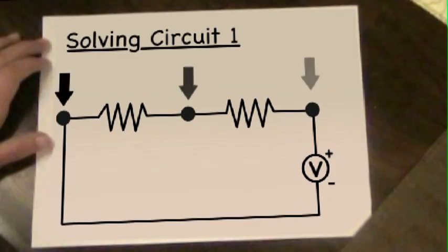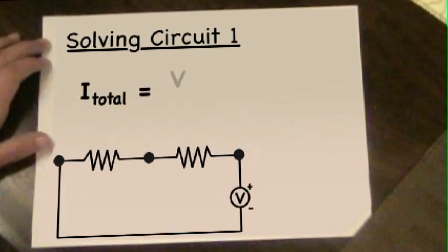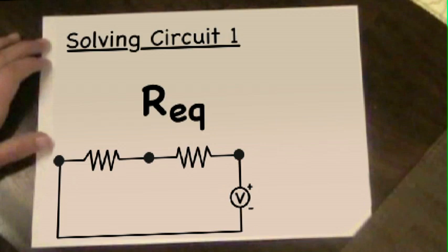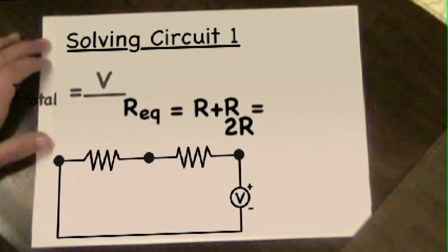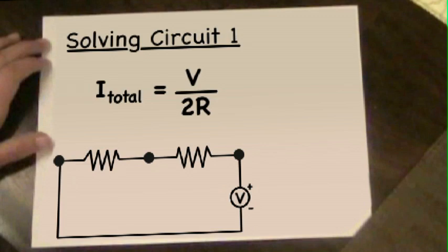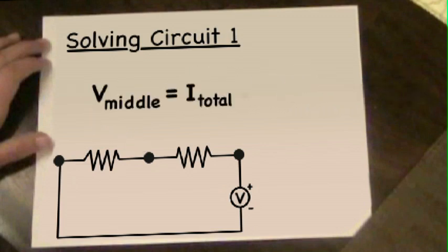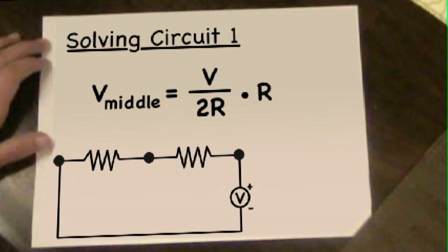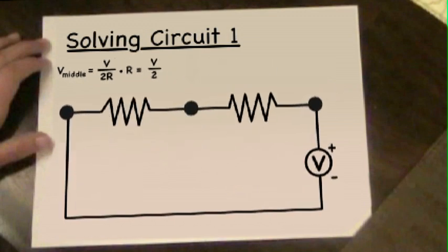Two-liter bottles were positioned at the locations of the three black dots. The total current flowing through the circuit is given by I_total, which equals the voltage V divided by the equivalent resistance R_eq. For series resistors, R_eq equals R plus R, which equals 2R. So I_total equals V divided by 2R. We can now solve for V_middle, which equals I_total times R. Substituting in I_total, we get V_middle equals V divided by 2R times R, which equals V over 2. This means we'd expect the water height at the middle of the circuit to equal half of the total water height of the pressure source on the right. From the experiment we find a very similar result.